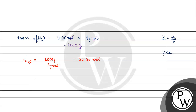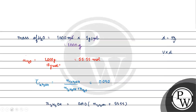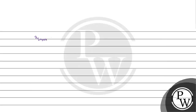Now, the mole fraction of ethanol is 0.040. We can write: mole fraction of ethanol equals 0.040, which equals the number of moles of ethanol divided by the number of moles of ethanol plus 55.55.